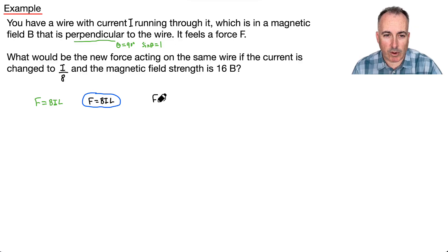Now, let's see what happens. They tell us, okay, same wire. If the current is changed to I over 8, magnetic field strength is 16B. So that means instead of B, I'm going to say 16B. All right, and instead of I, what do I say? I'm going to say I over 8.